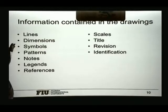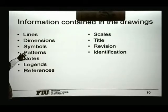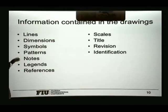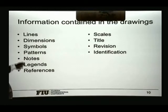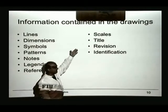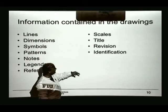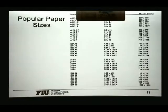We will see that we have different types of lines, dimensions of those drawings, symbols, different patterns. The architect writes some notes to let you know what they really want in some of those areas, or to clarify items that may not be completely clear. Legends let you know what these patterns and lines mean. There are references. We have to look very carefully — each drawing will have a different scale, a title that explains what the drawing is, revisions, and some sort of identification.